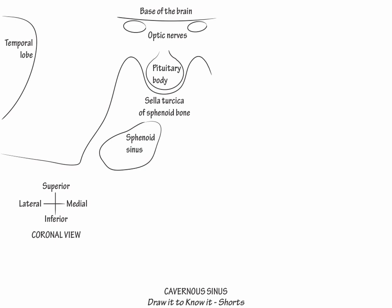Next, draw one of the bilateral cavernous sinuses between the sella turcica and the temporal lobe, show that the sphenoid sinuses are air-filled, whereas the cavernous sinuses are filled with venous blood.